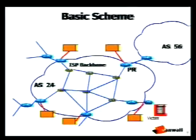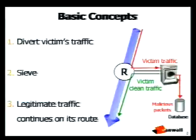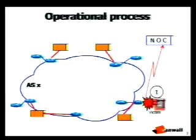One deployment possibility is to put these special devices — washing machines that know how to wash the traffic — on your peering routers, or at the access router. When there is an attack, you activate the diversion, have the washing machine clean the traffic, and let the legitimate traffic reach the intended destination. The victim is no longer a victim and can survive the attack. The basic principle is: divert the traffic, have the washing machine clean it, and return the legitimate traffic. The whole process is activated by a detection mechanism.